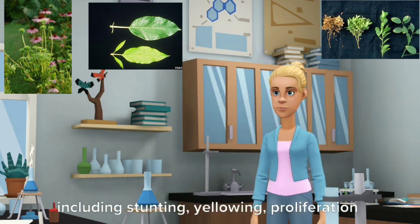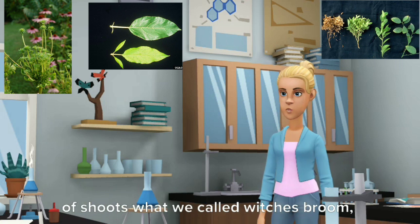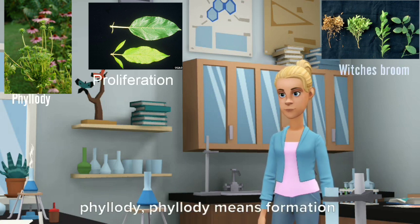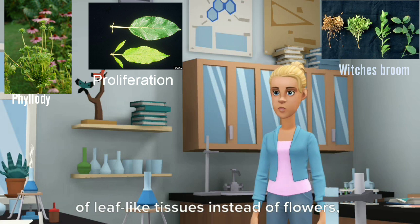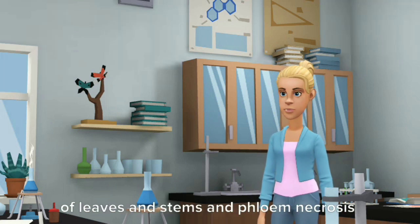including stunting, yellowing, proliferation of shoots—what we call witches' broom—phyllody (phyllody means formation of leaf-like tissues instead of flowers), greening of floral organs, reddening of leaves and stems, and phloem necrosis.